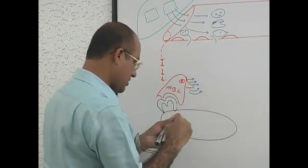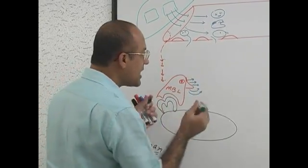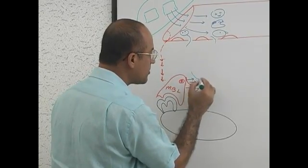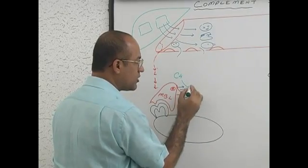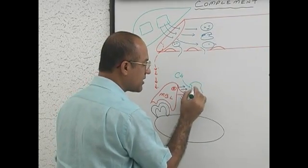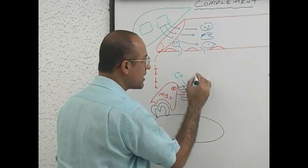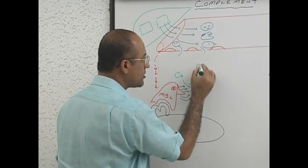And they activate certain proteolytic enzymes. These proteolytic enzymes which are activated by mannose binding lectins, they actually, now you know what will happen, they break down C4 into, what is binding here? C4B. And which will go away? C4A.